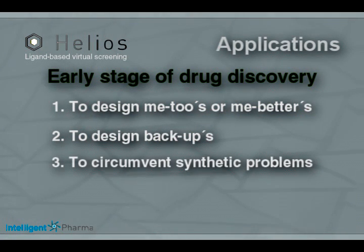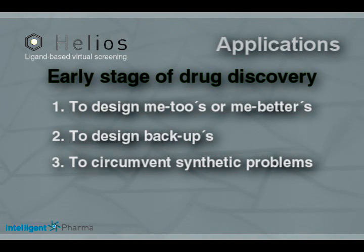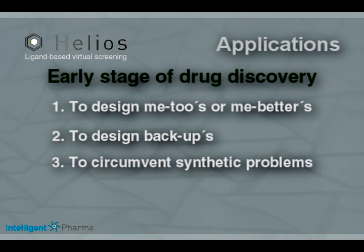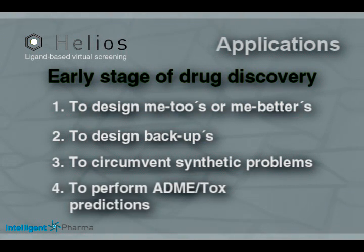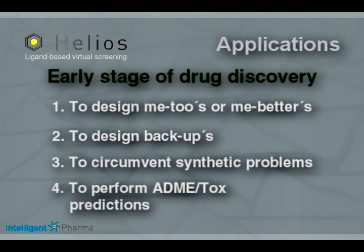To circumvent synthetic problems or other ADME tox issues: if an active compound either gives low synthetic yield or is difficult to synthesise — a case often encountered with active natural products — Helios can identify structurally different compounds with the same biological activity. This is especially interesting when working with natural products. To perform ADME tox predictions, Helios can check if your compound of interest compares to toxic compounds; if this is the case, your molecule is most likely to also feature toxic characteristics.